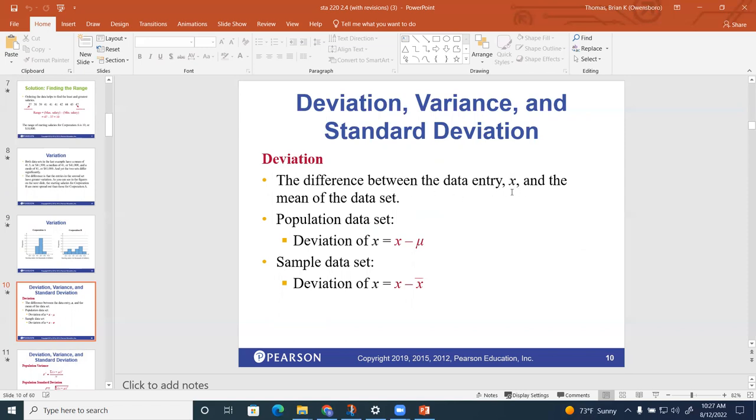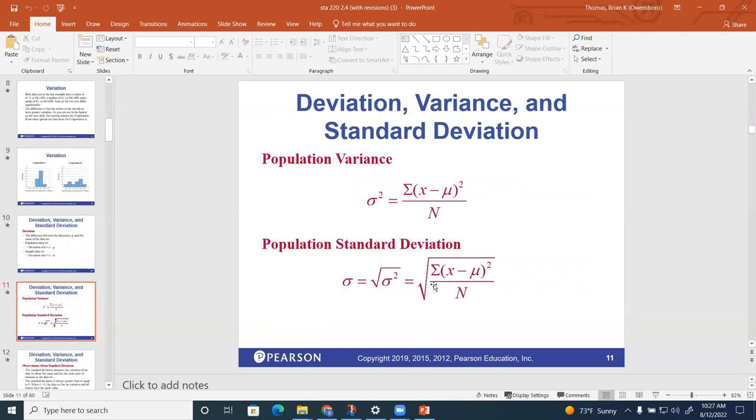So deviation in this book is the difference between the data entry, which they're going to use the letter x, and the mean of the data set. If we're talking about a population set, the deviation of x is the data entry minus μ, which represents the mean of the population. If we're talking about a sample data set, it's x equals the data entry minus x-bar, which is the mean of a sample.